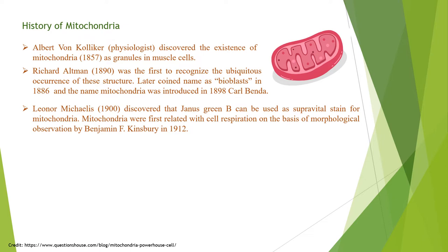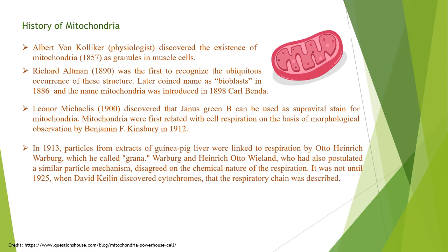Leonor Michaelis discovered that Janus green can be used as a supra-vital stain for mitochondria in 1900. Benjamin F. Kingsbury in 1912 first related them with cell respiration but almost exclusively based on morphological observations. In 1913, particles from extracts of guinea pig liver were linked to respiration by Otto Henrik Warburg, which he called grana. Warburg and Henrik Otto Wendler, who had also postulated a similar particle mechanism, disagreed on the chemical nature of the respiration.